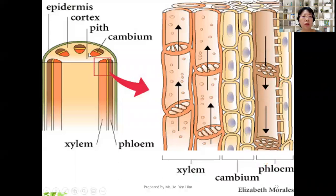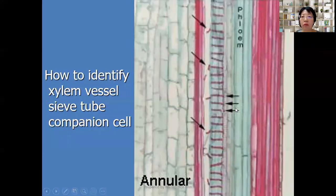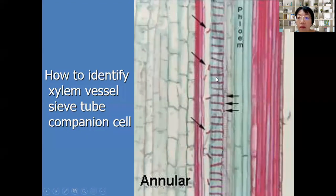We have seen the transverse section of the vascular bundle. In longitudinal section, all the cells will look elongated. In the center of the vascular bundle facing the center of the stem is the xylem, so you can see the xylem elements. Then you can see the cambium, and here are the sieve tube elements and companion cells. In this actual micrograph, the xylem vessel has lignin thickening, the phloem region contains the sieve tube, this is sclerenchyma, and these are parenchyma cells.